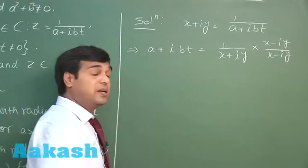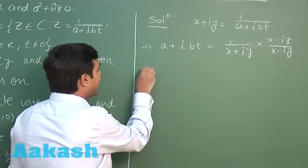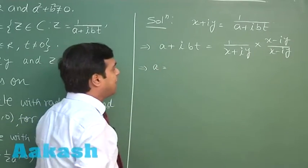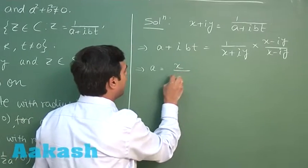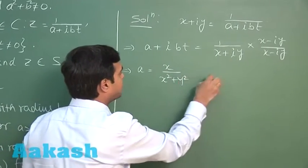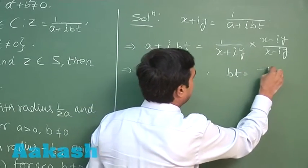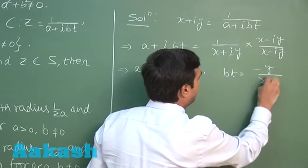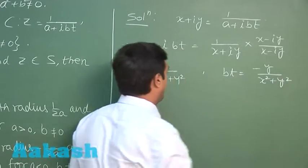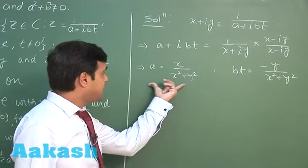Equating real and imaginary parts, we have a = x/(x²+y²), while bt = -y/(x²+y²). If I look at this first part, I can simply observe x²+y² - x/a = 0 as the equation of the circle.